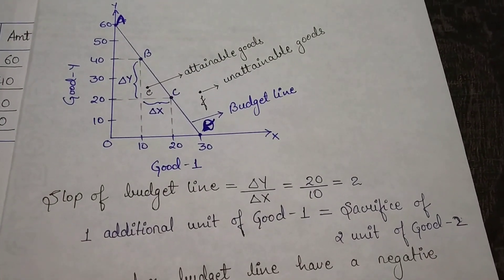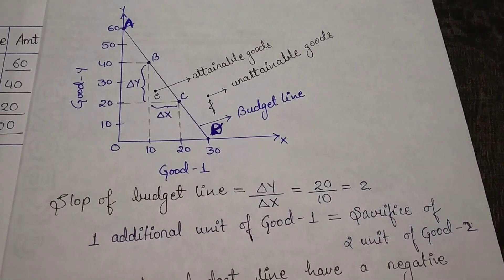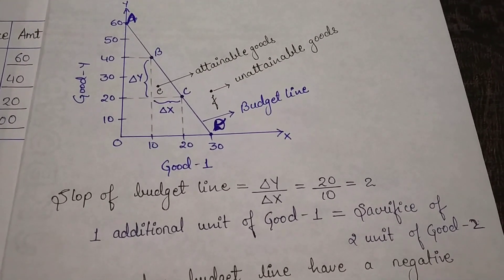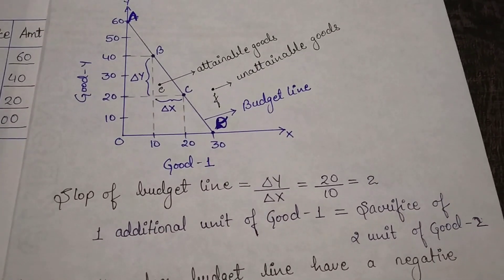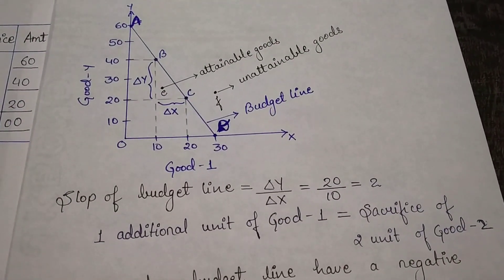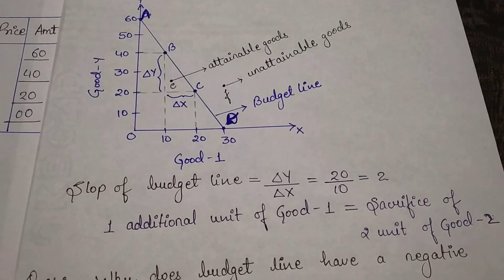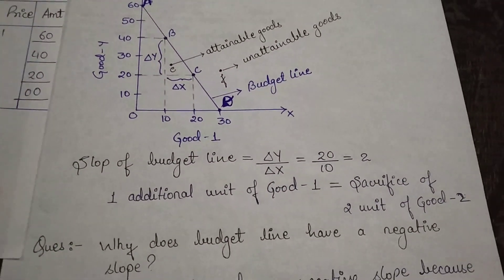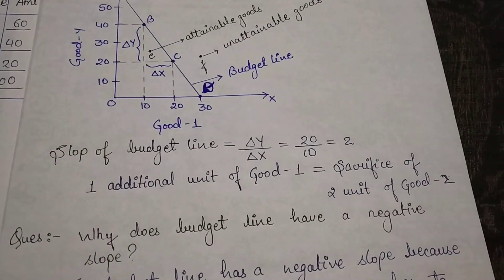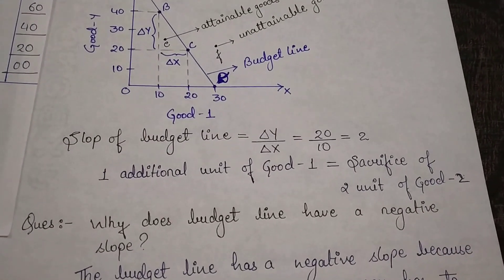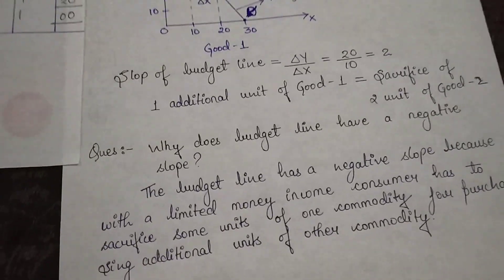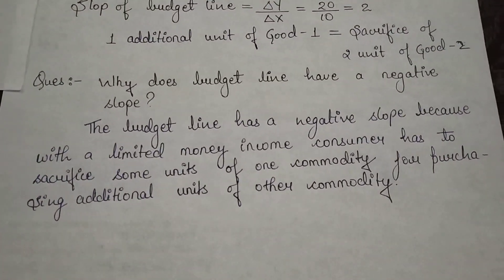Slope is delta y upon delta x. When good one's consumption increased from 10 to 20, good two's consumption fell from 40 to 20. Delta y is 40 minus 20 equals 20, and delta x is 20 minus 10 equals 10, giving us 2. So for consuming one additional unit of good one, we sacrifice two units of good two. One additional unit of good one equals sacrifice of two units of good two.